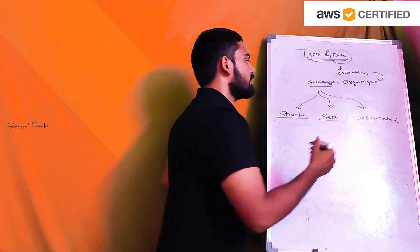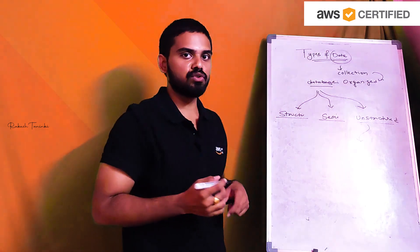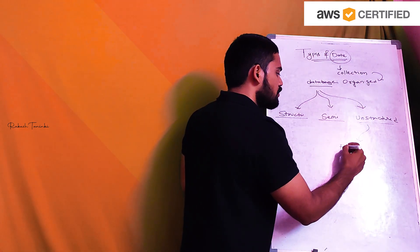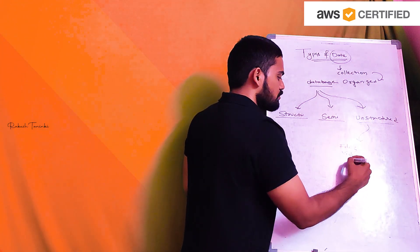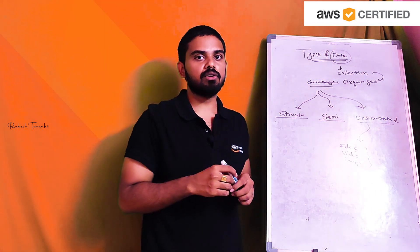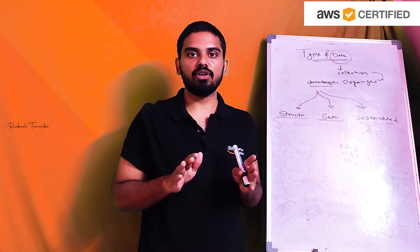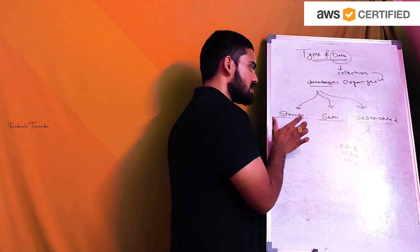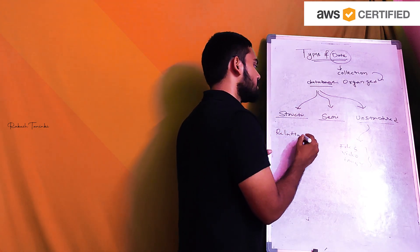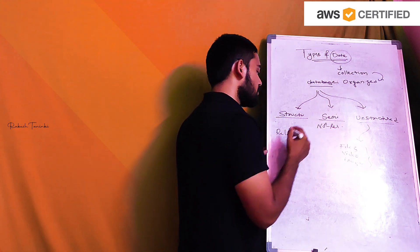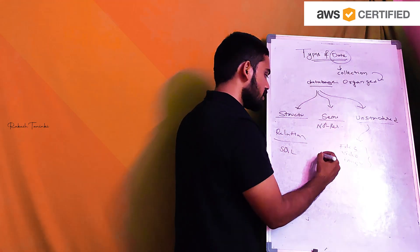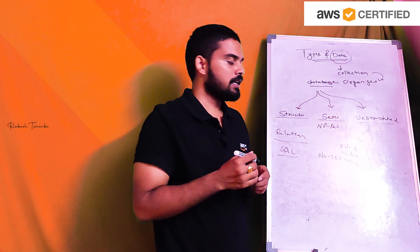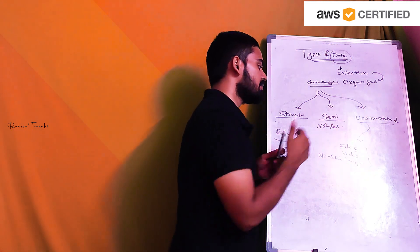Lastly, we have unstructured data. What is unstructured data? In unstructured format, examples include files, different files, videos, and images — various formats. Unstructured data also has database support. Structured data uses relational databases, also called SQL. Semi-structured data uses non-relational databases, called NoSQL. SQL stands for Structured Query Language, and NoSQL stands for Not Only Structured Query Language.